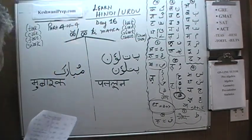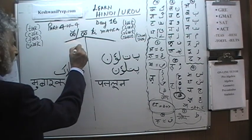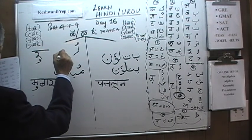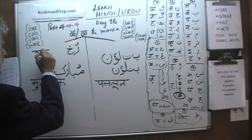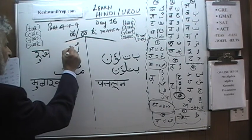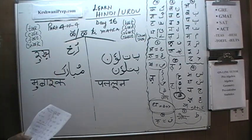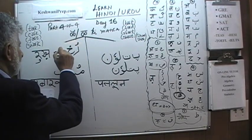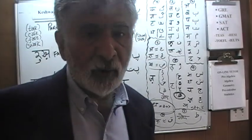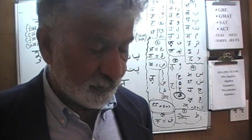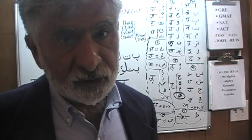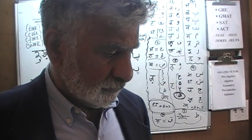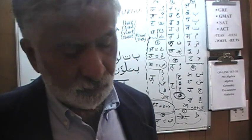With Choti Uki Matra, let's write 'Rukh.' R with Pesh makes Ru, then Kh — and because it's the dotted Kh, it takes a dot. Rukh means face. You hear this word often in poetry, Ghazals, and Qawwali. They don't say Chaira — they say Rukh.